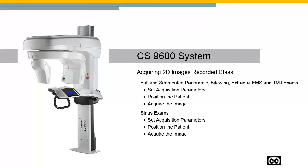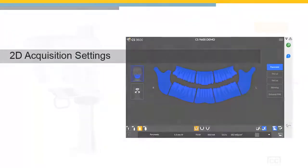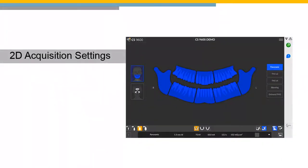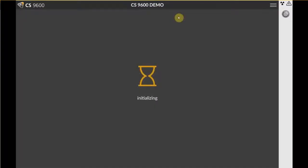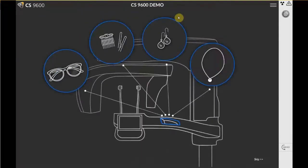CS9600 System, Acquiring 2D Images Recorded Class. To set the acquisition parameters for Full and Segmented Panoramic, ByteWing, Extraoral FMS, and TMJ Exams, follow these steps. Launch the Panoramic Acquisition Interface from the acquisition computer.